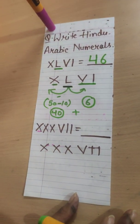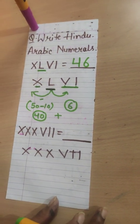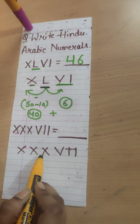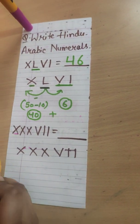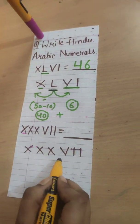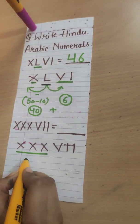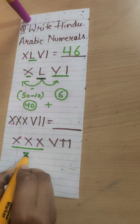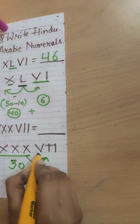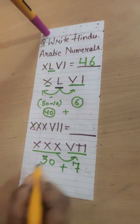First, we will find the greatest number. And then, we will go to left side. Then, we will go to right side. Let's come to our next question, which is XXXVII. The greatest of all is these only X, 10, 10, 10, 5, 1, 1. These all 10 belongs to same. 10 plus 10 plus 10 is 30. Then, let's move to right side. 5 plus 1 plus 1 is 7. 30 plus 7 is 37.